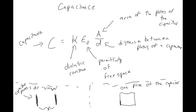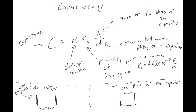The permittivity of free space is just a constant, and it equals 8.85 times 10 to the minus 12. The units on this are farads divided by meters. The variable for capacitance that we use is capital C, and the unit for capacitance is capital F, which is a farad.